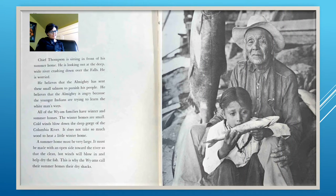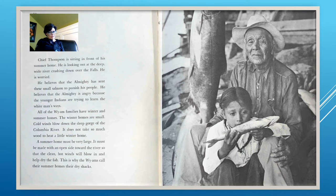Chief Thompson is sitting in front of his summer home looking out at the deep wide river crashing down over the falls. He is worried — he believes that the Almighty has sent these small salmon to punish his people because the younger Indians are trying to learn the white man's ways. All of the YM families have winter and summer homes. The winter homes are small. A summer home must be very large, made with an open side toward the river so that hot winds will blow in and help dry the fish. This is why the YMs called their summer homes their 'dry shacks.'